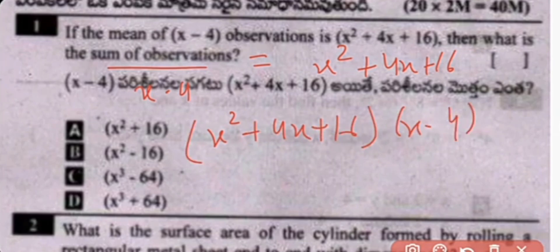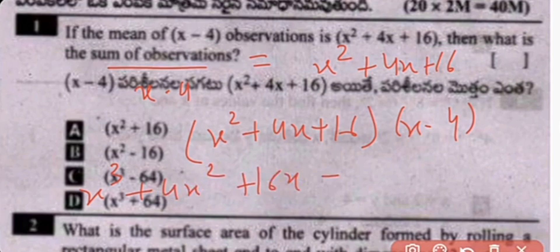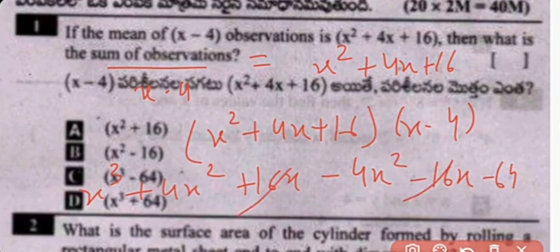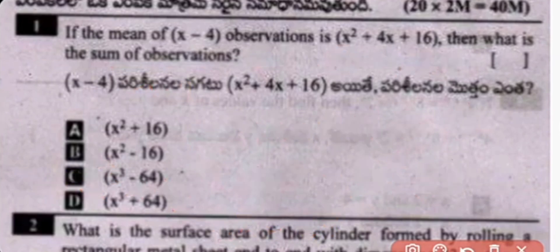Expanding: x times x squared gives x cubed, 4 times x squared gives 4x squared, 16 times x gives 16x, minus 4x squared minus 16x minus 64. The like terms cancel out, leaving x cubed minus 64 as the right answer for question number 1.